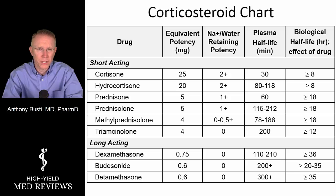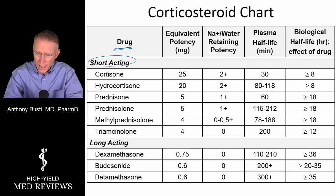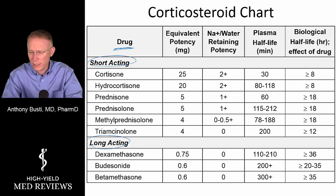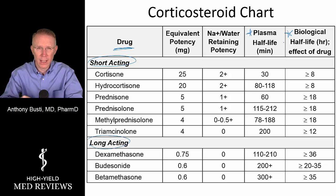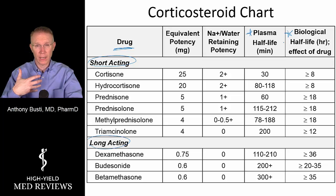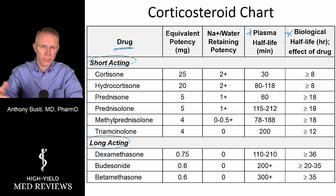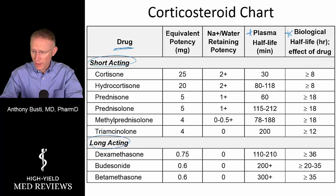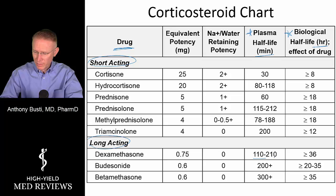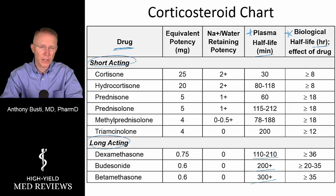Looking at this corticosteroid chart, there are two main categories: short-acting versus long-acting corticosteroids. The last two columns compare plasma half-life — the time the drug is in the system — versus biologic half-life, which is what happens once the steroid has bound to receptors inside the cell and initiates the biologic response. Even though the drug has left the body, it's still carrying on its effects. The long-acting agents — dexamethasone, budesonide, and betamethasone — can cover a patient longer compared to prednisone, prednisolone, and methylprednisolone.